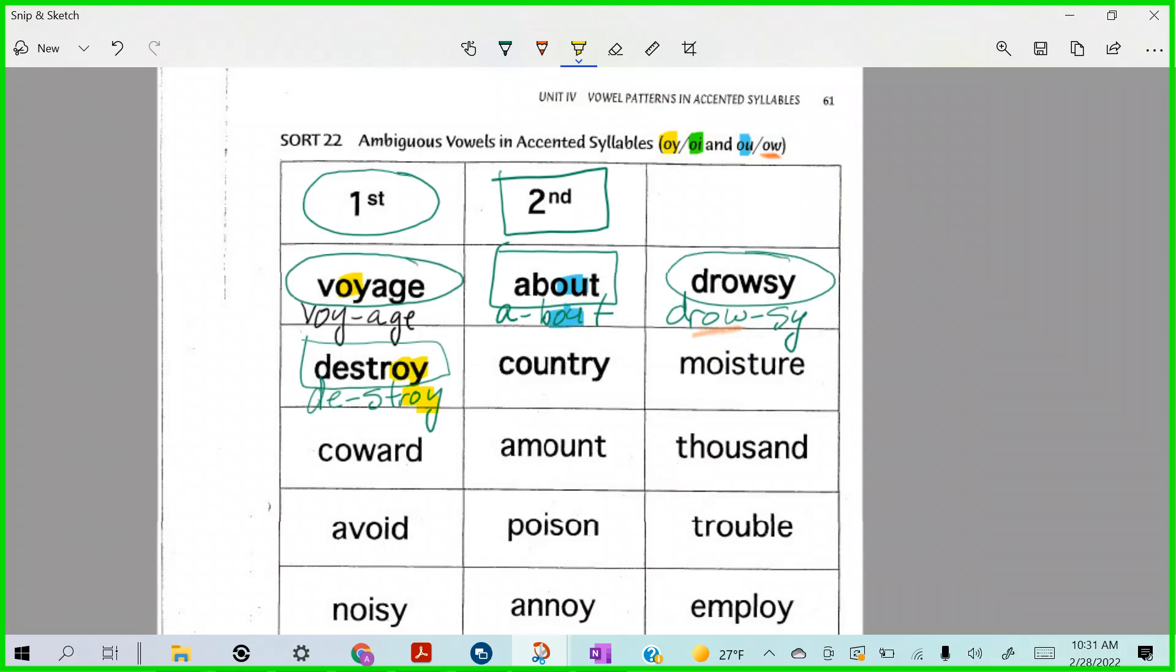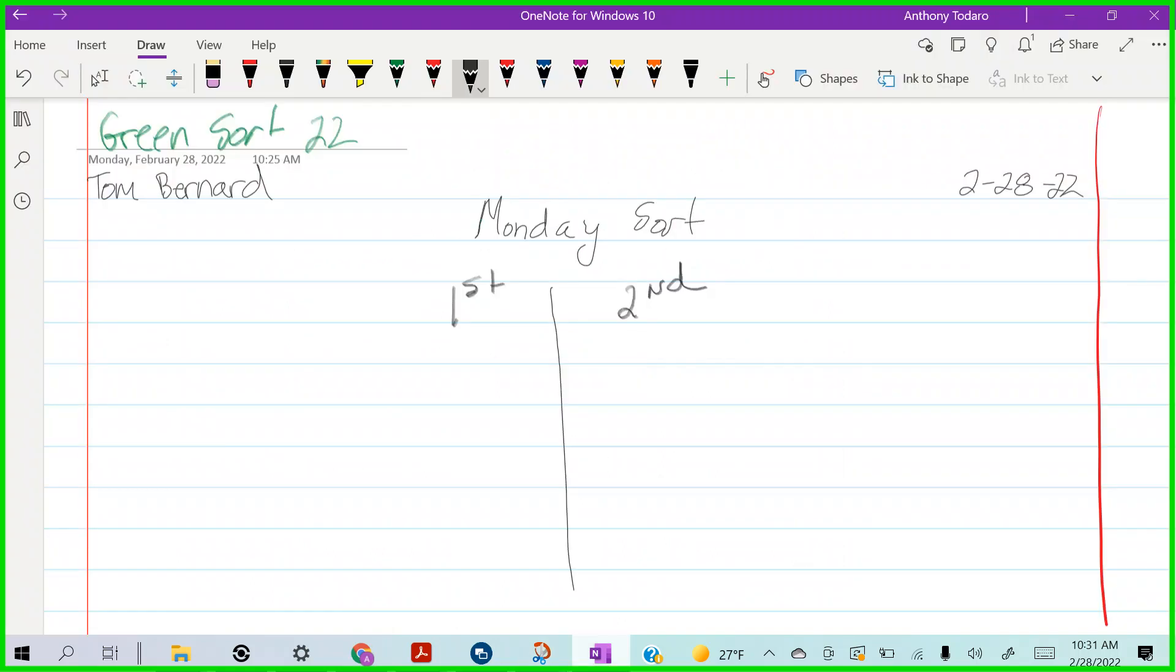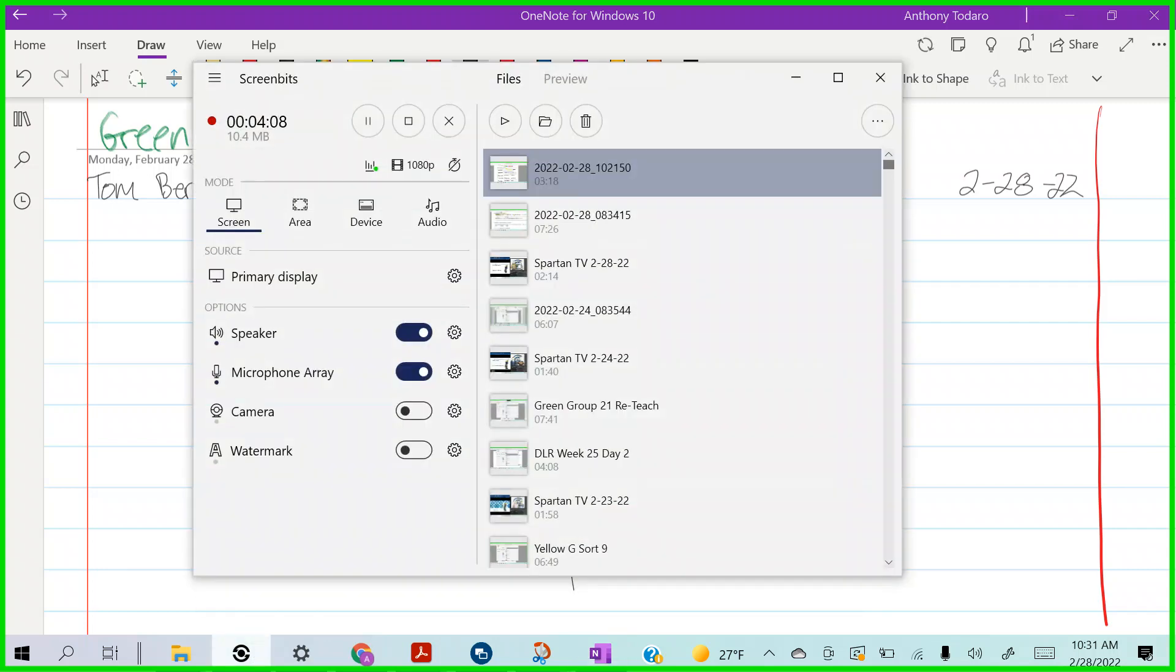Do you guys understand your sort? And so now you'll take that over here and you are going to split your words. Voyage - guess what, I hear the OY in the first syllable so I'll go VOY. All right, you guys got it. All right green groupers, good luck today.